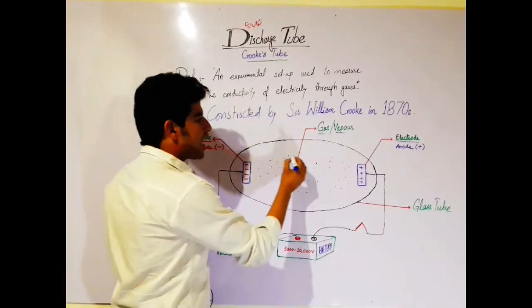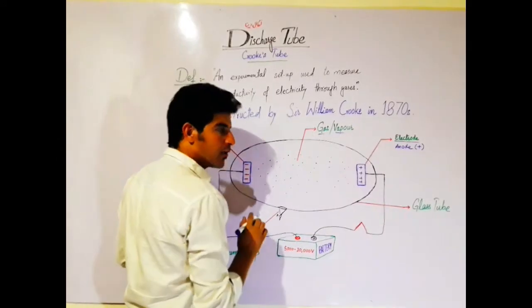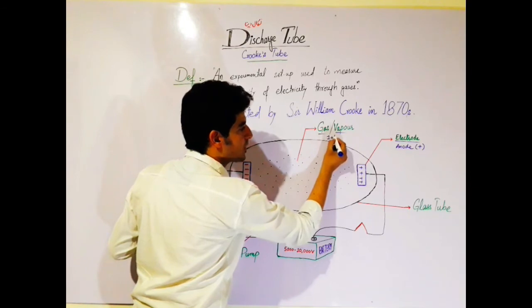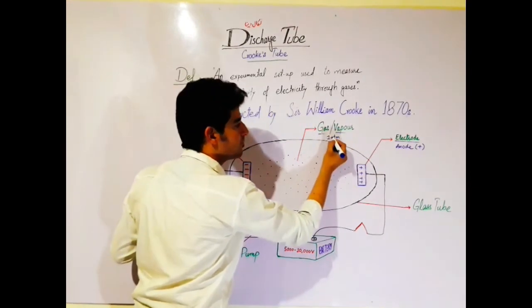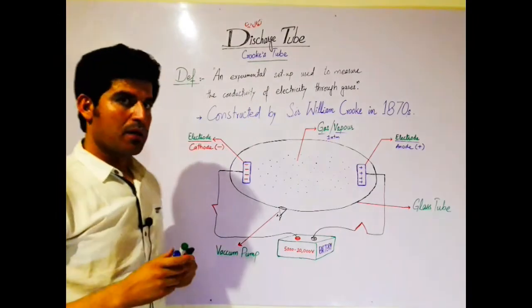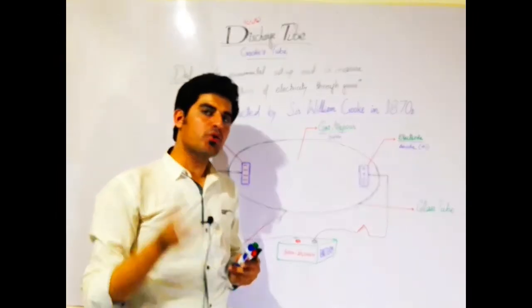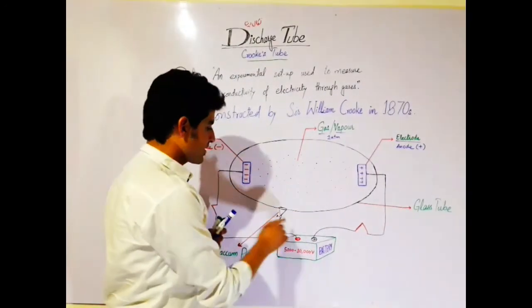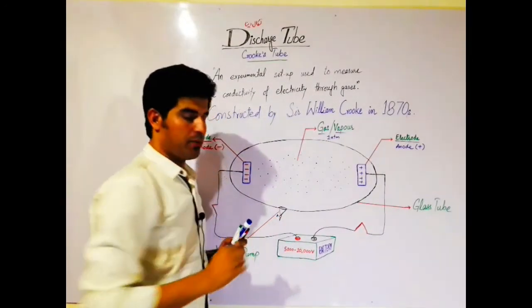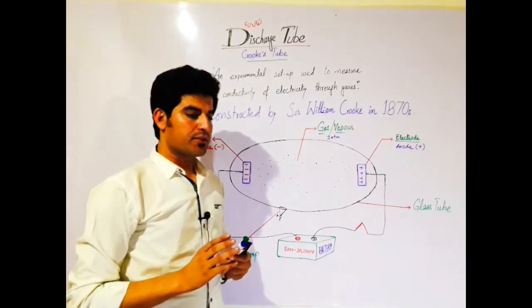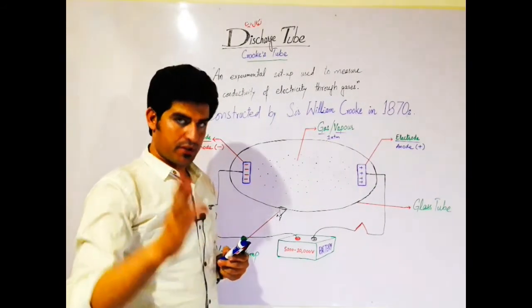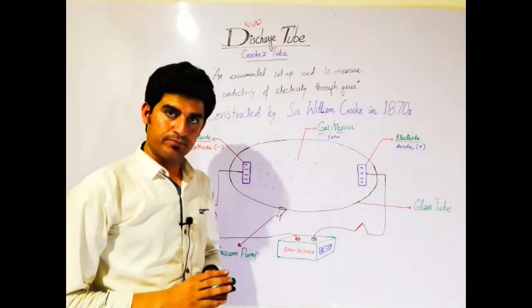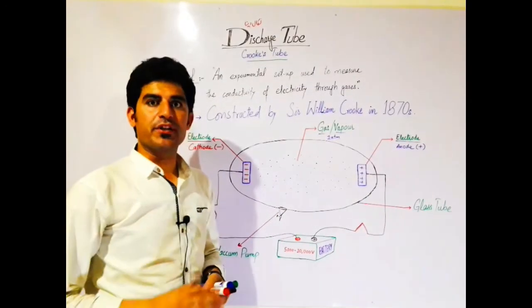At normal pressure, the pressure is 180 mm. The everyday pressure we experience is 180 mm. Now, according to the experiment, you need to decide whether to increase or decrease the pressure — you can adjust it through a vacuum pump. So this was all about the discussion of the discharge tube. Thank you so much, inshallah we will meet in the next lecture.